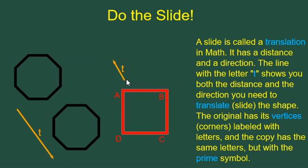What we'll do is we'll measure the translation line to see how far it has to go, and then we draw some lines from each vertex in the same direction and the same distance. It'll look like this. Then, if we connect the dots at the ends of those lines, we get our copy.